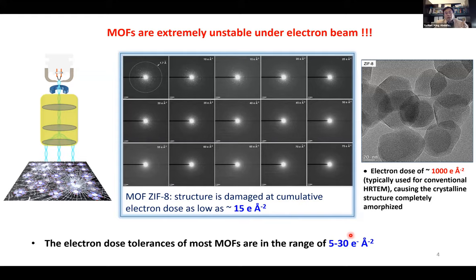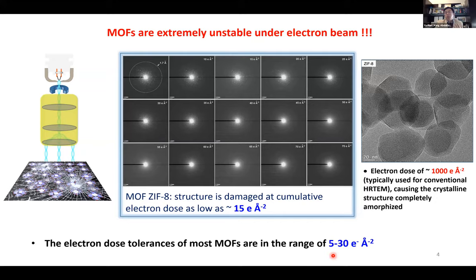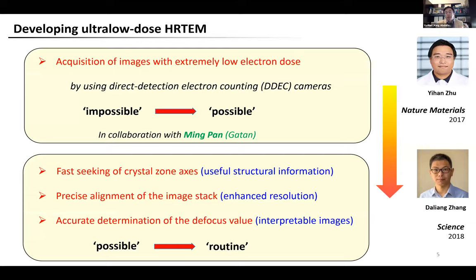We also evaluated the beam stability of some other MOFs using the same method. Although the exact beam tolerance depends on many factors — such as MOF structure, electron beam energy, and crystal size and orientation — in general, all studied MOFs are very sensitive to the beam. Their beam tolerance is in the range of 5 to 30 electrons per square angstrom, which is very low. Conventional HRTEM cannot be conducted at such low dose conditions because the signal-to-noise ratio would be too poor to show any information.